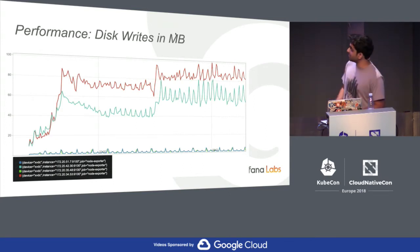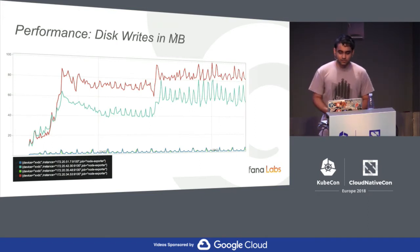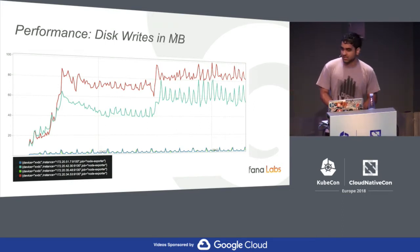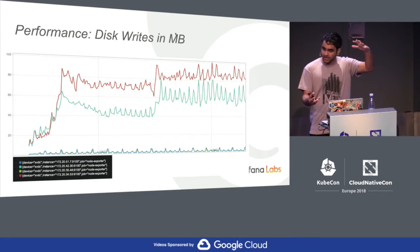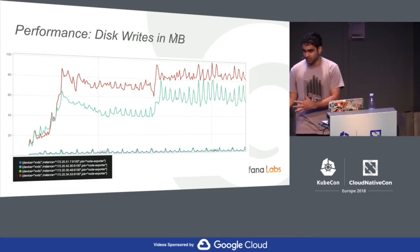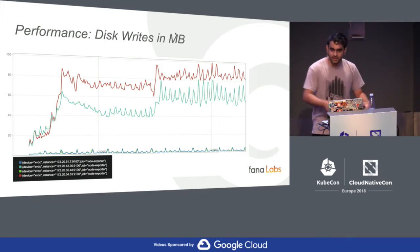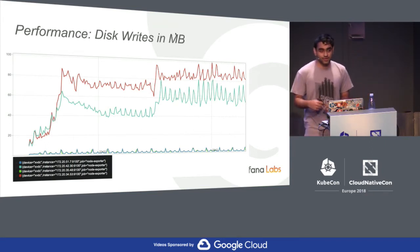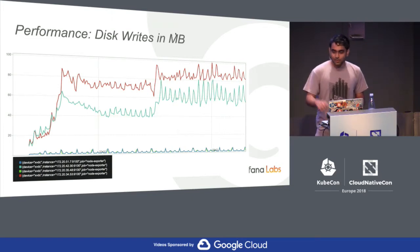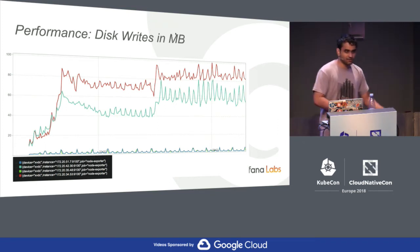The disk writes literally blew us away. Prometheus 2.0 writes very little, but Prometheus 1.0 writes around 80 MB per second — even though they're scraping the same data. Why? For crash resiliency, 1.0 periodically checkpoints all in-memory data to disk, writing the same data again and again. What we do instead is use a write-ahead log. The moment a sample comes in, we write it to disk once. If we crash and restart, we just replay the write-ahead log instead of a checkpoint.